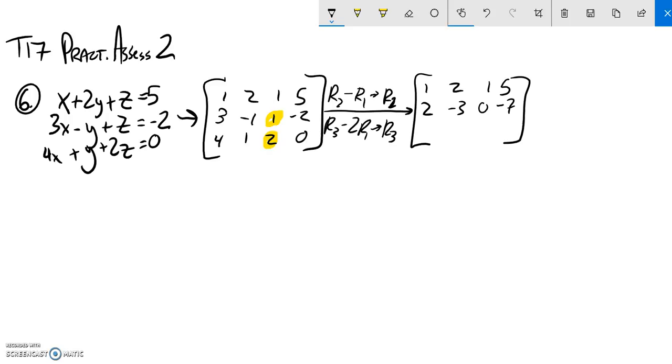Row 3 minus 2 times row 1. So 4 minus 2 times 1 is 2. 1 minus 2 times 2, so that's 1 minus 4, that's negative 3. 2 minus 2 is 0. 0 minus 5 times 2 is negative 10.